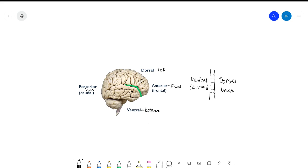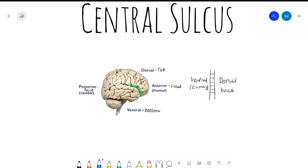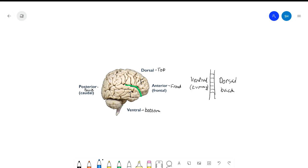I also wanted to talk about the central sulcus. The central sulcus is this line right here. This is supposed to divide the frontal lobe from the parietal lobe. And right next to the central sulcus are the precentral gyrus and the postcentral gyrus.